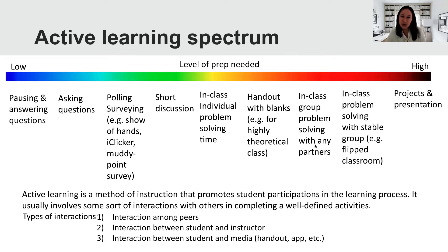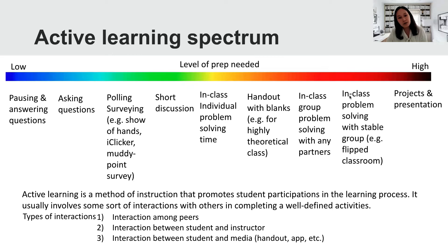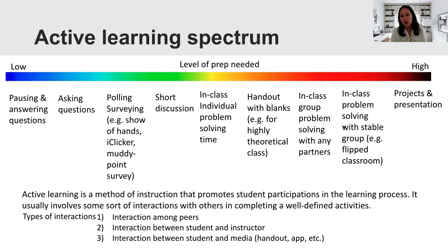The last activities require a little more prep. For group problem solving, you can let them solve problems with any partners — changing every time, which is easier to manage. Or you may want them to stay with the same group members for a certain number of weeks, which is what I use for my flipped classroom where they turn in a group activity sheet and get the same score. I found it helpful that students form a stable learning community they can turn to when they have questions outside of class. The highest prep needed would be a group project or presentation.